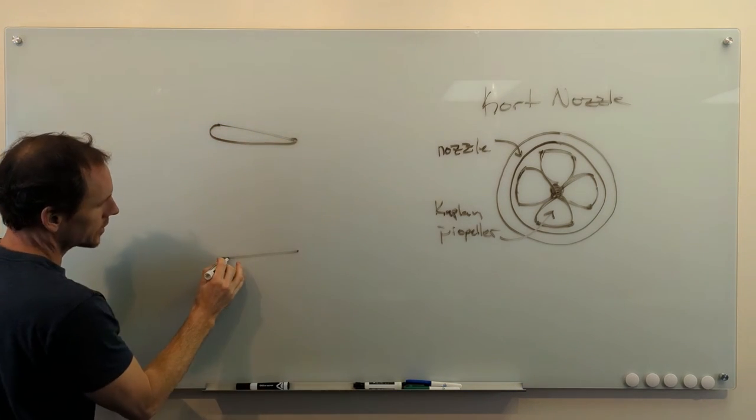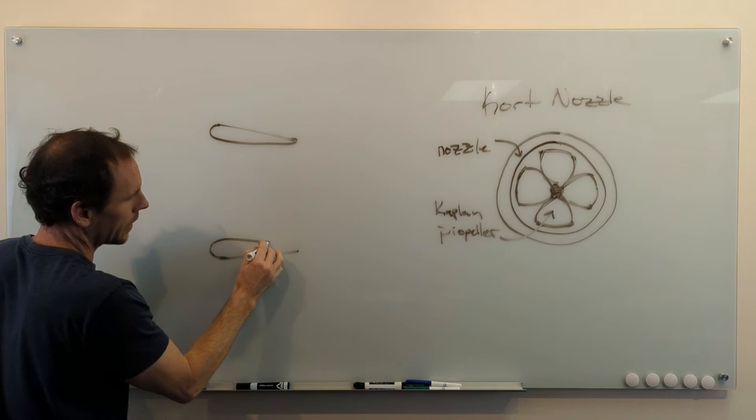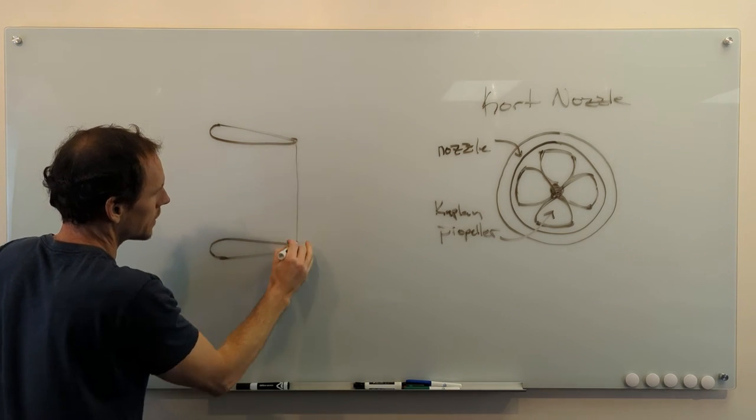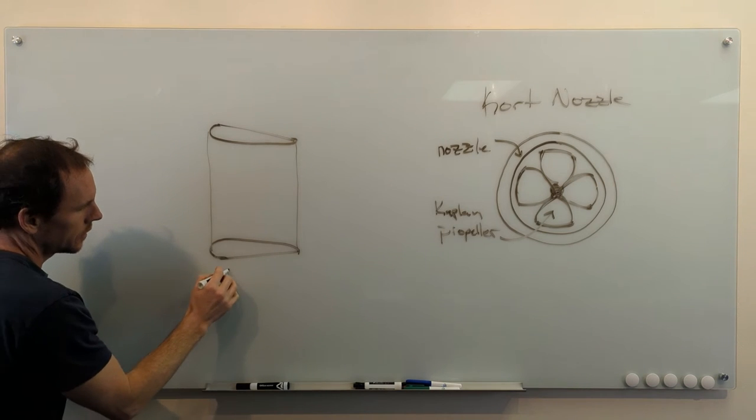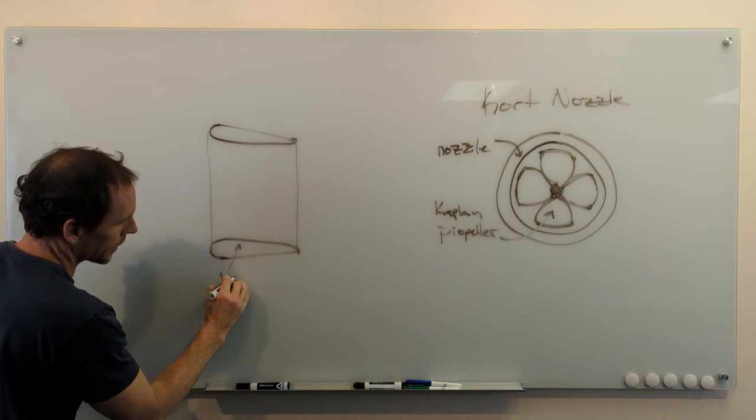You see how this cross section kind of looks like a wing? So here's your kort nozzle. See this, it's got a wing like shape.